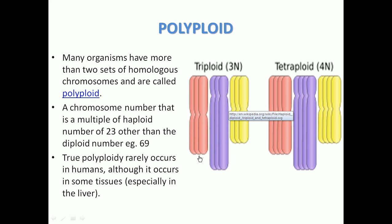But if there is a change in the number of chromosomes in a set — for example, instead of two in a set we have three in a set — this is called polyploidy. If the number of chromosomes increases by the set, it is called polyploidy.